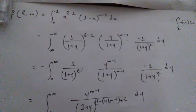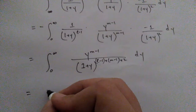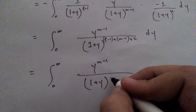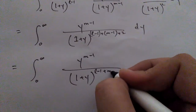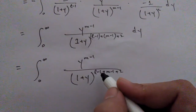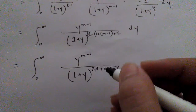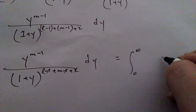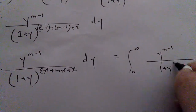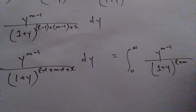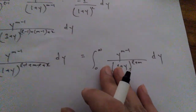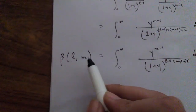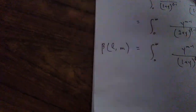So in the denominator the power is (l−1) + (m−1) + 2, which equals l + m (since −1 − 1 + 2 = 0). The beta function of l and m is therefore equal to the integral from 0 to infinity of y^(m−1) divided by (1+y)^(l+m), dy.